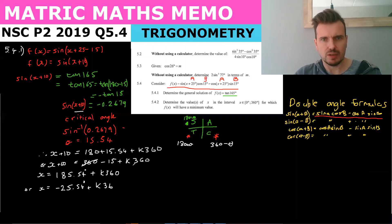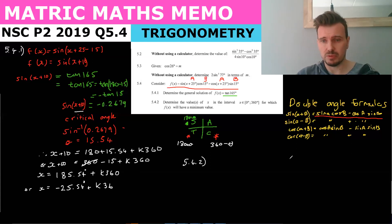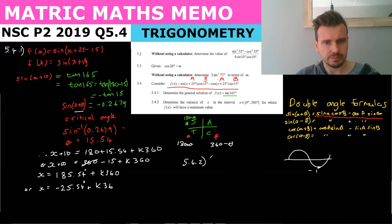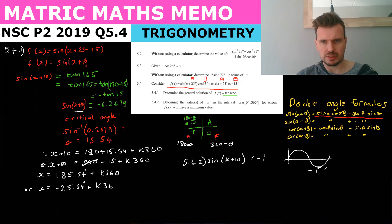For 5.4.2, we need to determine the values where f(x) is a minimum. The minimum of the sine graph is -1, so we set sin(x + 10) = -1.